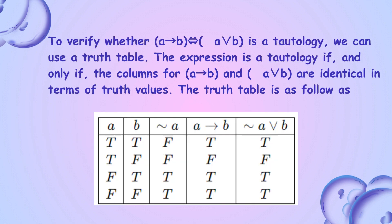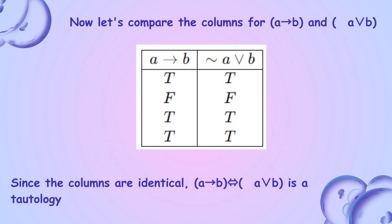To verify whether ABA is a tautology, we can use a truth table. The expression is a tautology if and only if the columns for ABA and ABA are identical in terms of truth values. The truth table is as follows. Since the columns are identical, the given expression is a tautology.